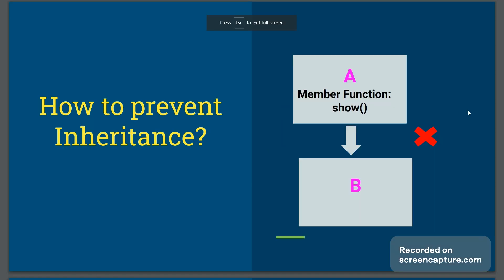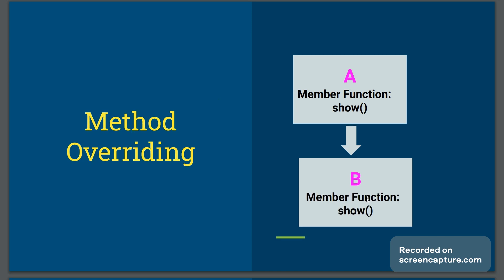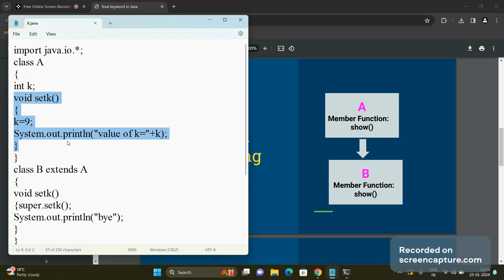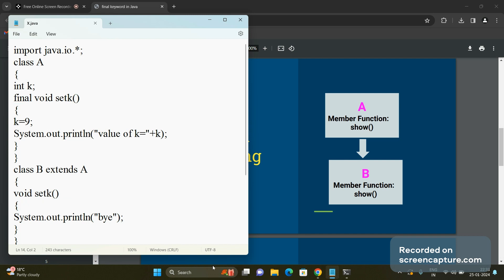To prevent method overriding means if there is a setK() function in the base class, I don't want a derived class to have any function with the same name and same signature. To prevent this, we use the final keyword: just precede the method declaration of the base class with the final keyword. Let's see what happens when we compile the code.